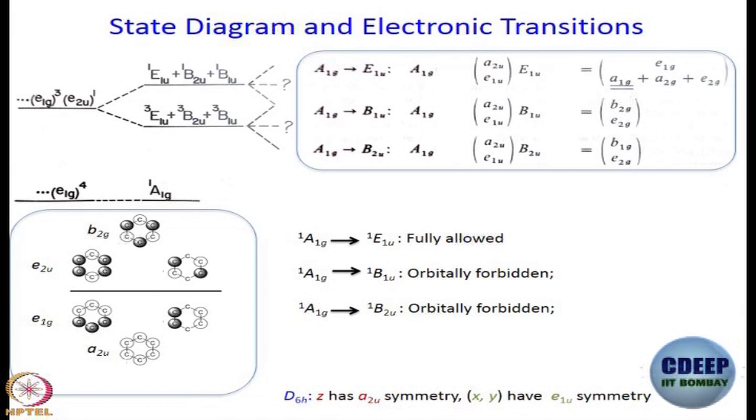But if it is not orbitally allowed, you don't throw away the direct product. You see what the direct product is, B2G, E2G, B1G, E2G. What we are saying is, in these cases, if I have a normal mode whose symmetry is B2G, then that normal mode can couple with these electronic levels and can make this orbitally forbidden transition vibronically allowed. If I have a normal mode that has E2G symmetry, then the same thing happens. In case of A1G to B2U transition, I need normal modes of B1G or E2G symmetry.